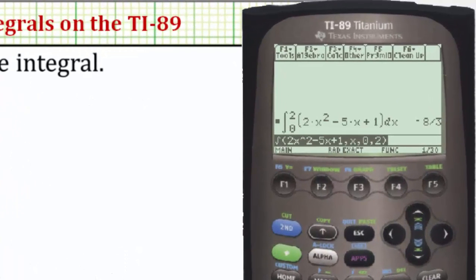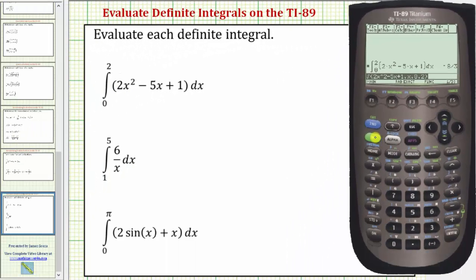Now I should mention I do have the calculator in exact mode which we can see here. The value of the definite integral is negative eight thirds. If for some reason we did want the decimal approximation for this, we can press diamond enter.